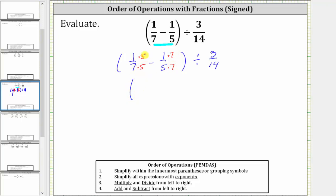1/7 is equivalent to 5/35. 1/5 is equivalent to 7/35.